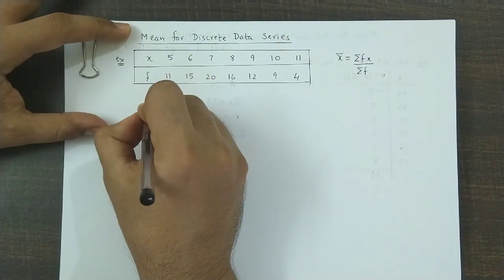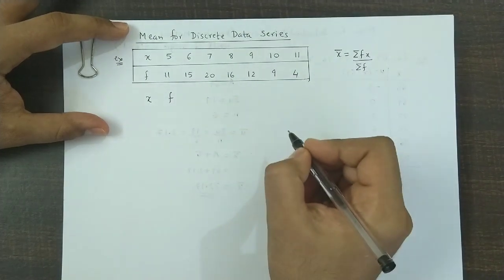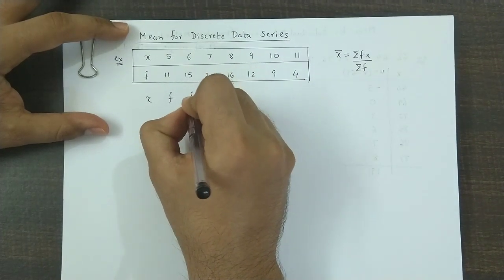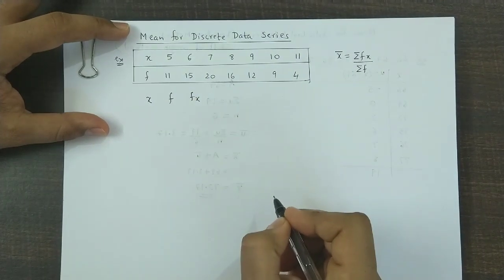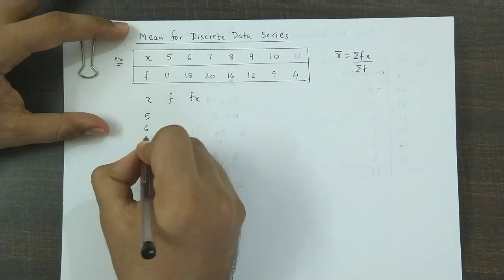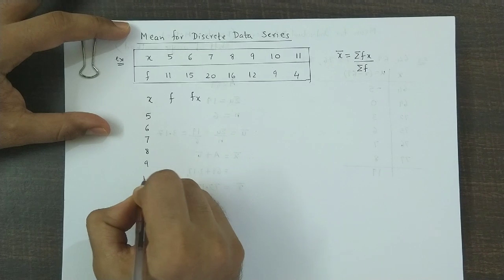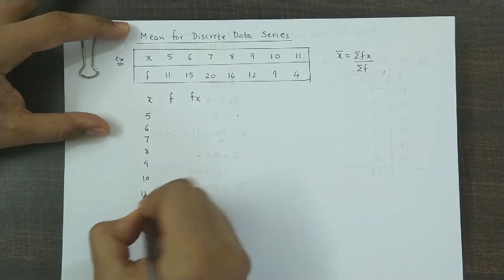We have x, the column for x, then the frequency column, next column would be f into x. We have the x values as 5, 6, 7, 8, 9, 10, and 11.